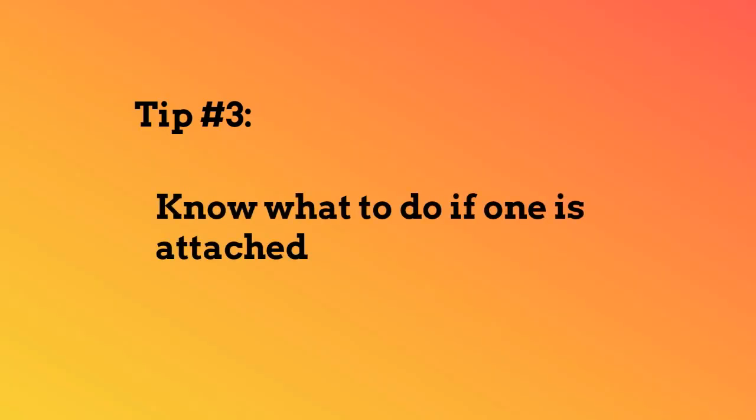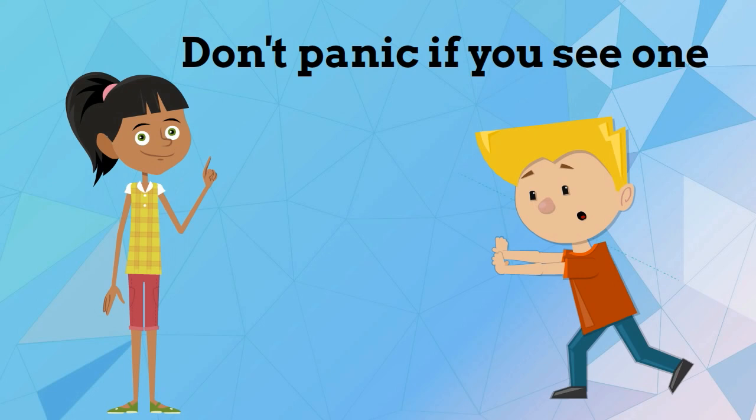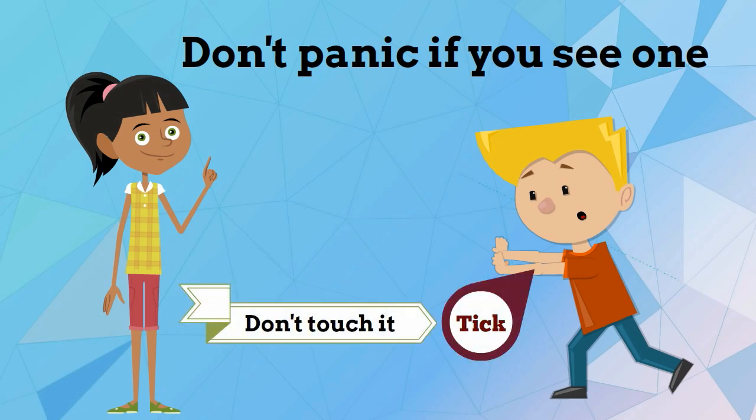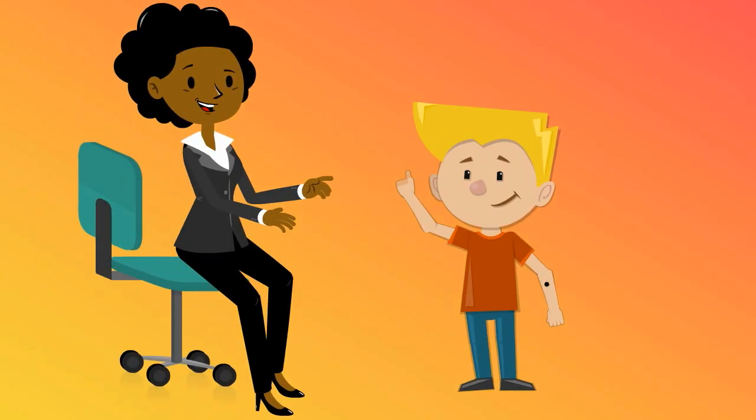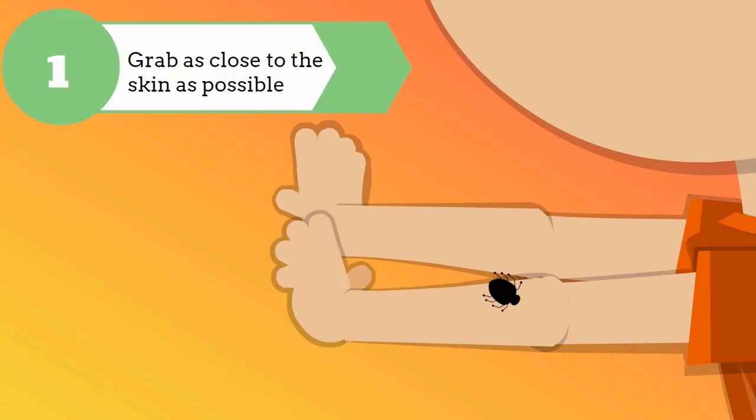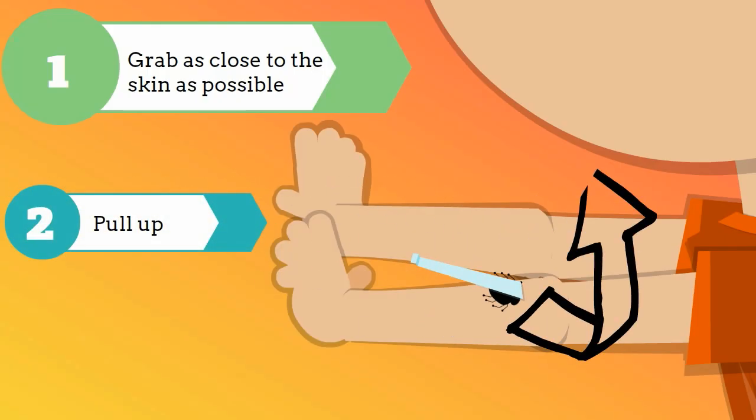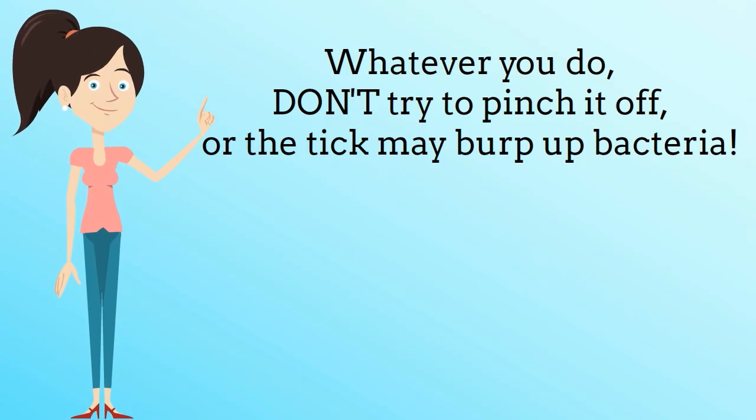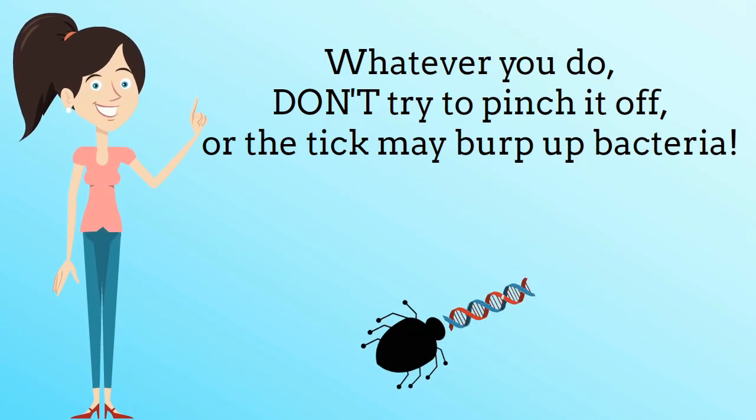Know what to do if one is attached. Don't panic if you see one. It's important not to touch it. Calmly find an adult to remove it with a pair of fine tipped tweezers. Grab it as close to the skin as possible and pull up. The tick may hold on but don't be alarmed. Keep pulling gently and it will let go. Whatever you do, don't try to pinch it off or the tick may burp up bacteria.